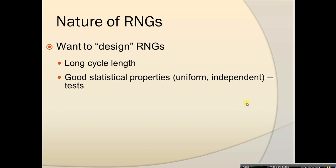We want good statistical properties. We assume the numbers we get are uniformly distributed and also independent. In reality they're not completely this way, but if they look similar enough to random numbers and we cannot distinguish them — if statistical tests for uniformity and independence fail to reject those hypotheses — then that's good enough for us.